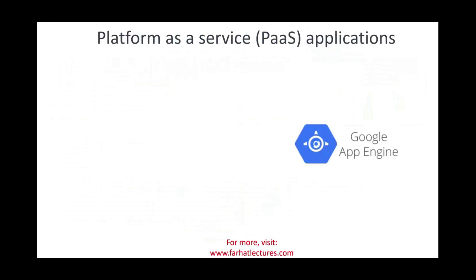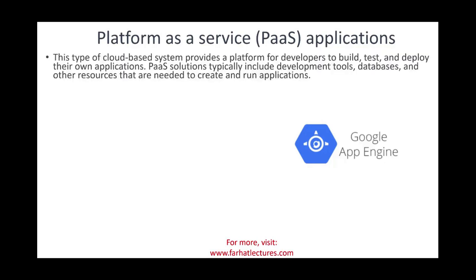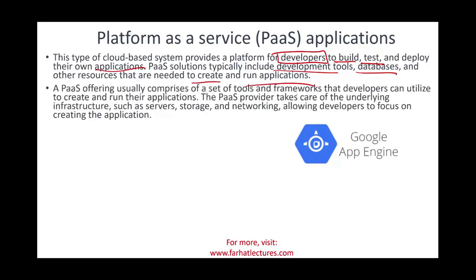The second category is Platform as a Service, or PaaS. This type of cloud computing provides a platform for developers. Developers build, test, and deploy their own applications. If a company wants to create a new application or website, PaaS gives them the platform to do that — it includes the tools, databases, and other resources needed. The PaaS provider, like Google App Engine, takes care of the underlying infrastructure such as servers, storage, and networking, allowing developers to focus on developing the application.